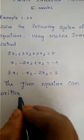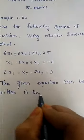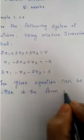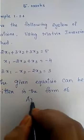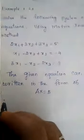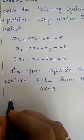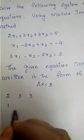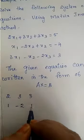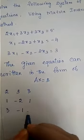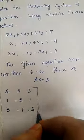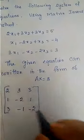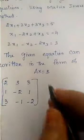A represents your coefficients: 2, 3, 3, 1, minus 2, 1, 3, minus 1, minus 2. So these coefficient elements we can consider as capital A and X represents your variables.